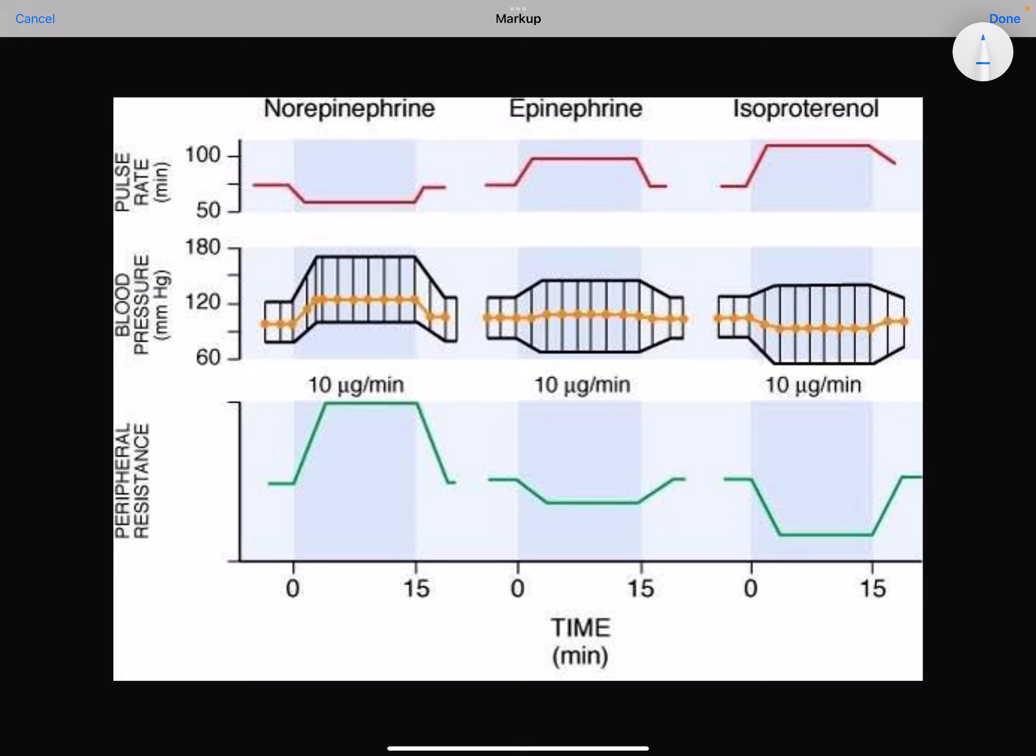Norepinephrine acts only in peripheral arterial system. It has nothing to do with the heart. So when it is in peripheral arterial system, it only acts on alpha receptors.